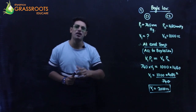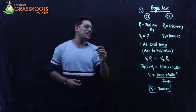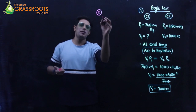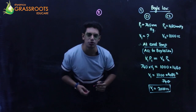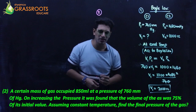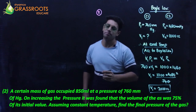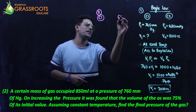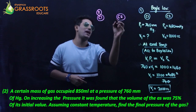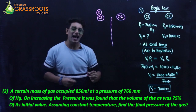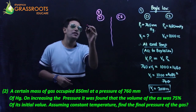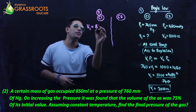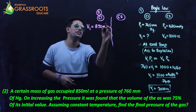The second numerical — temperature is again constant. I'm going to use case one and case two. The data is: volume one is 850 ml.